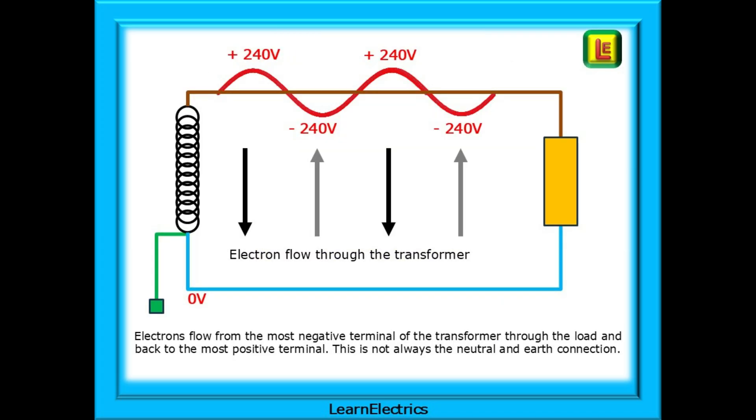You must understand that electrons flow from the most negative terminal of the transformer through the circuit or load and back to the most positive terminal. This most negative is not always the neutral and earth connection. Sometimes the line voltage is more negative than the neutral. This means that when the line is in a positive half cycle, that is to say line is more positive than the neutral, electrons flow from the bottom of our transformer along the neutral wire through the load and return to the top of the transformer along the line conductor.